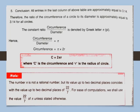This constant ratio is denoted by the symbol pi. So circumference upon diameter equals pi, and therefore circumference equals pi into diameter, which is 2r since diameter is double the radius. Therefore, C equals 2πr, where C is the circumference and r is the radius of the circle.